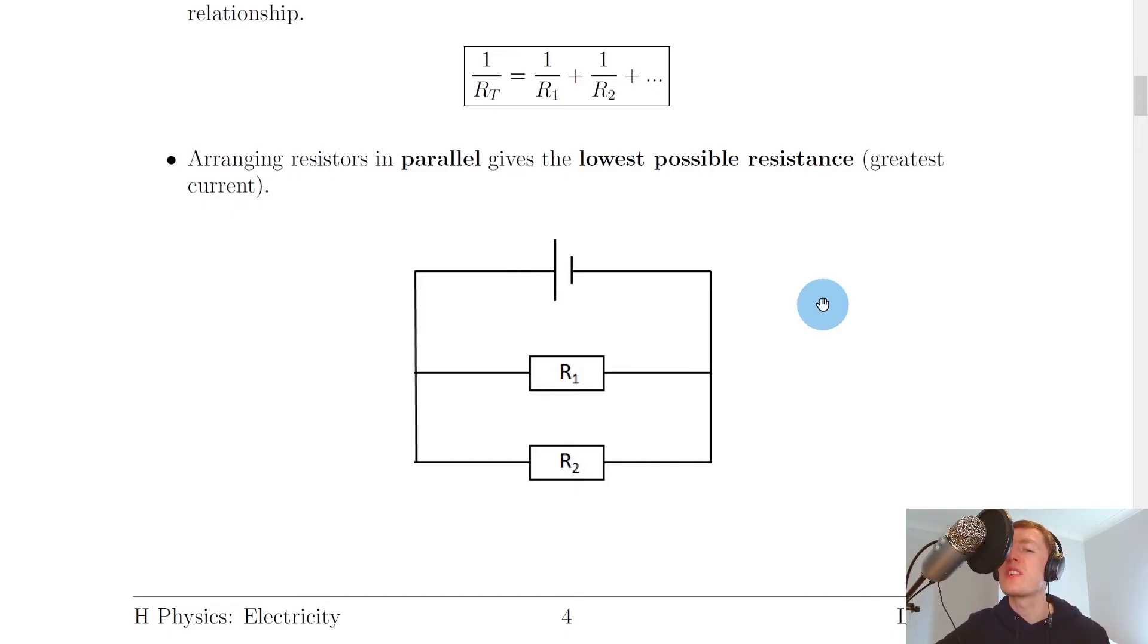In series, the total resistance of the circuit will increase when you add more resistors in series. However, in a parallel circuit, when you add more resistors in parallel with each other, the total resistance goes down.